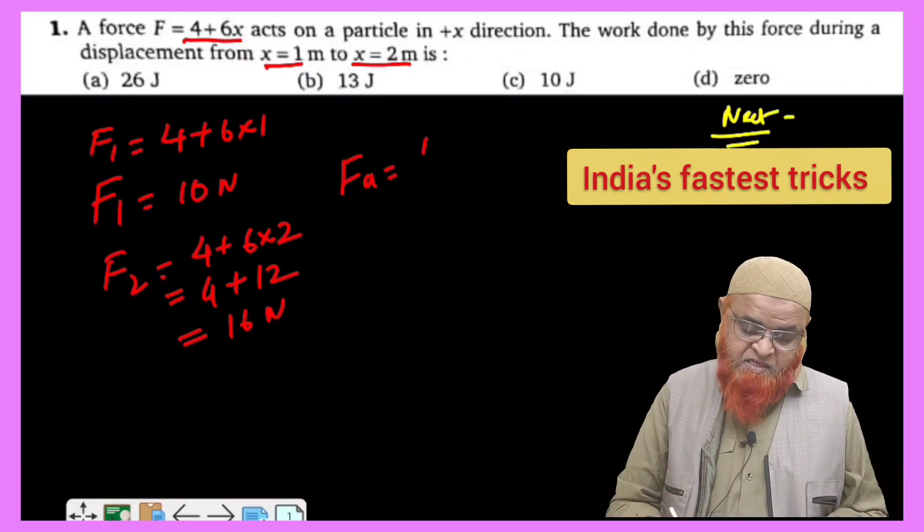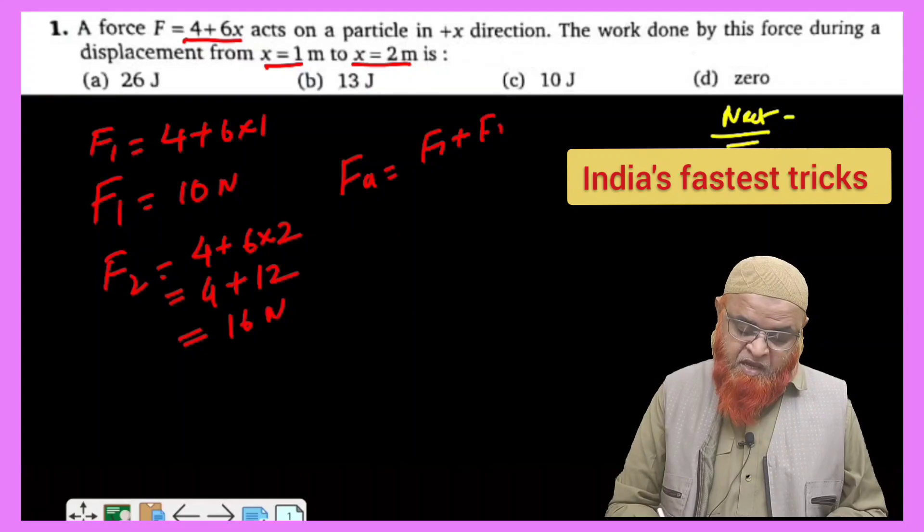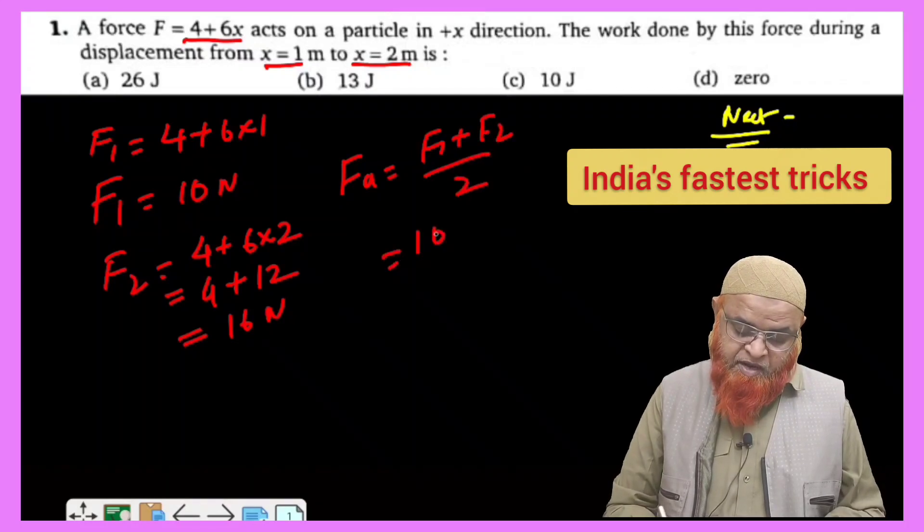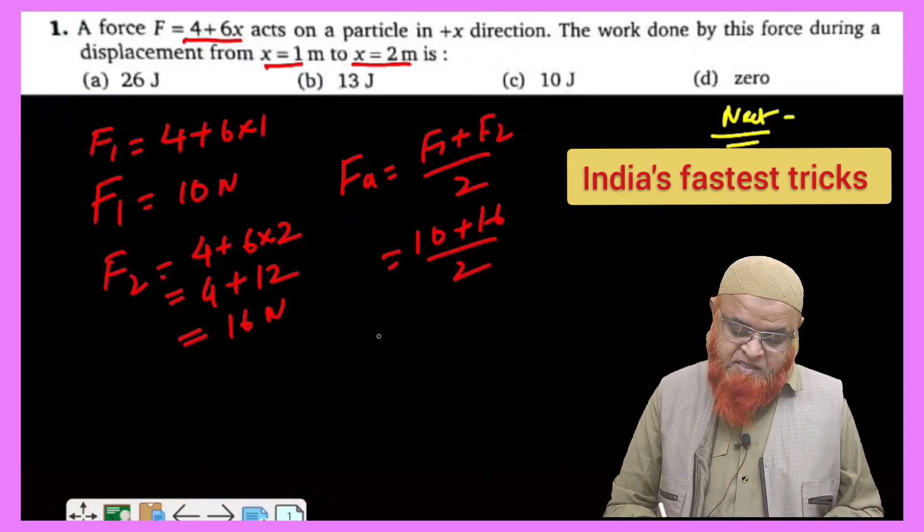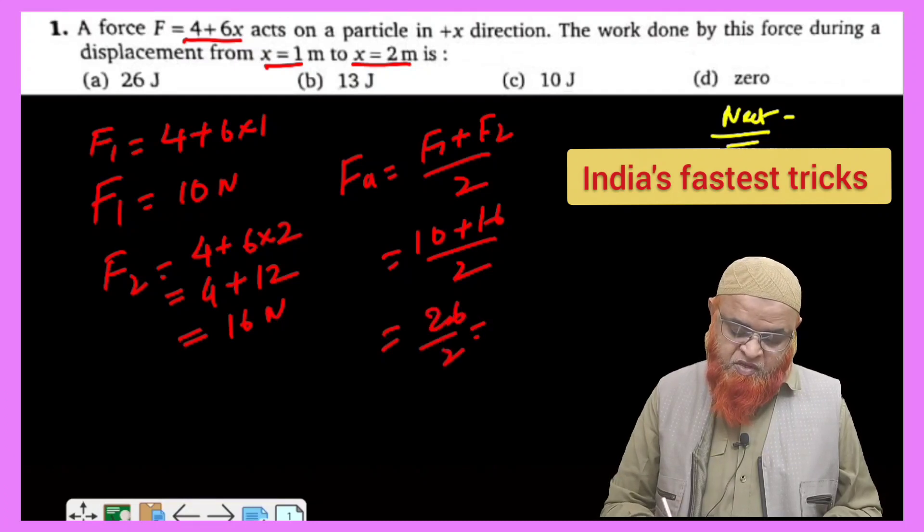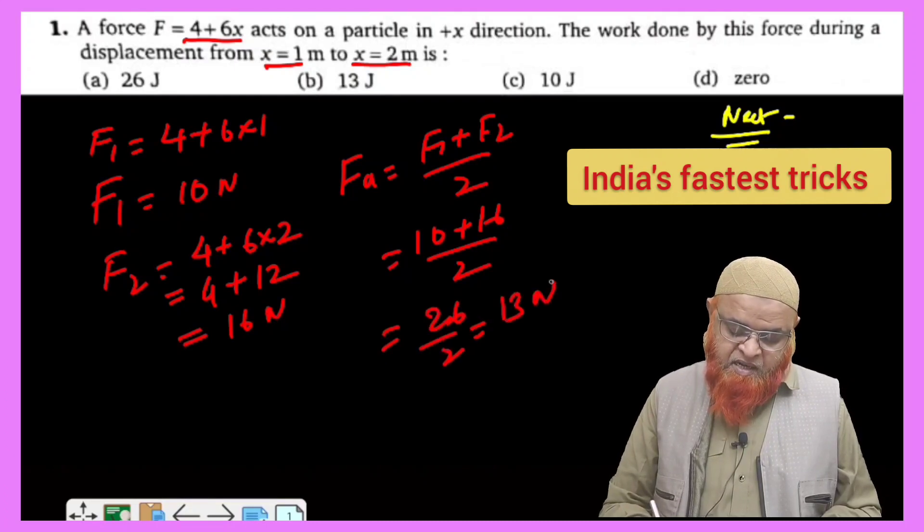Now you have to find out the average of this. The average is going to be F1 plus F2 by 2, which is 10 plus 16 by 2, which is 26 by 2, and that is going to be 13 newtons.